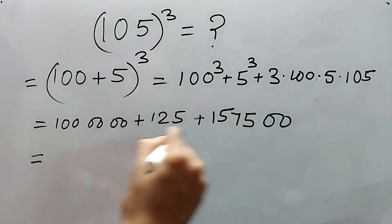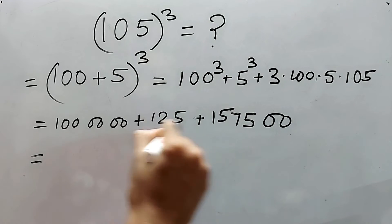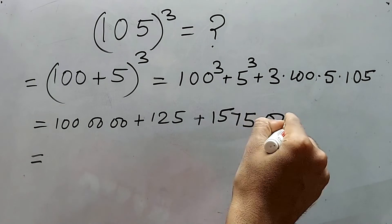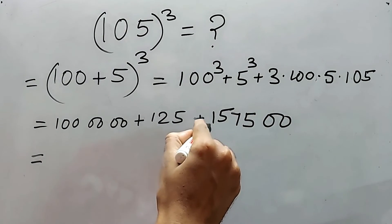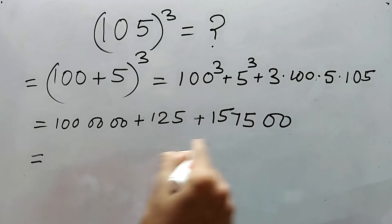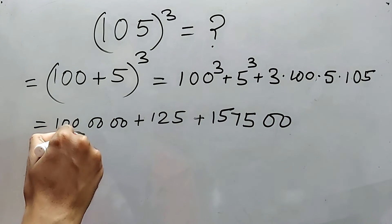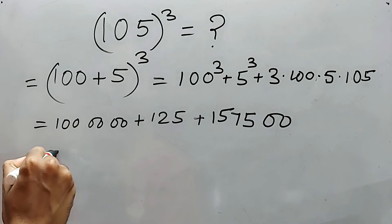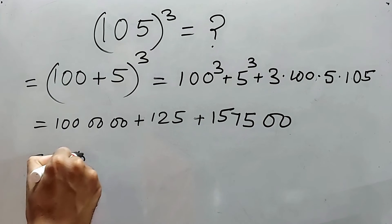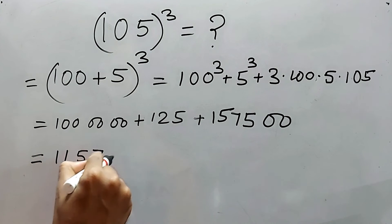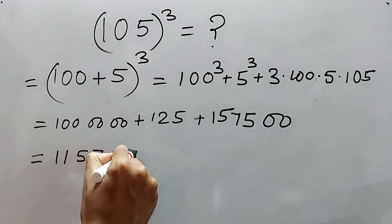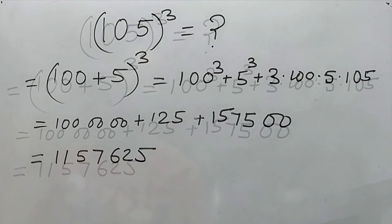1525 will be added here so 625. So 157625, and the whole thing will be added here. 1,157,625.